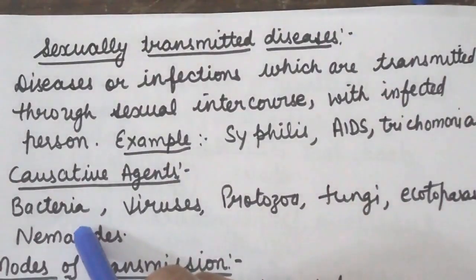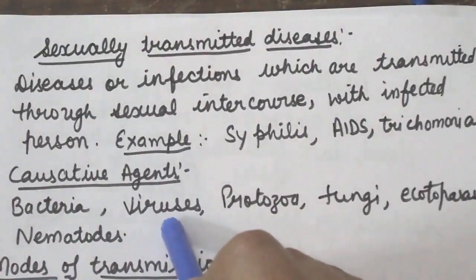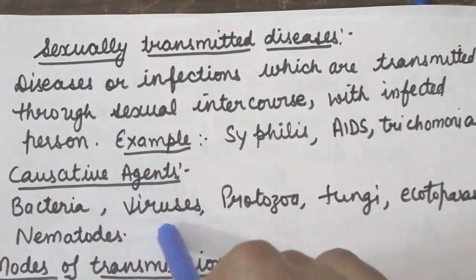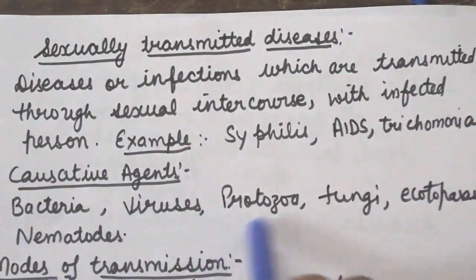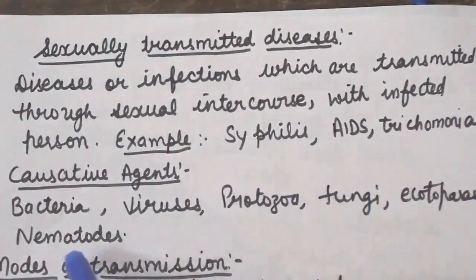Gonorrhea and syphilis are bacterial diseases. So many diseases are caused by bacteria and viruses, protozoa and fungi, ectoparasites and nematodes — they are all known as sexually transmitted diseases.